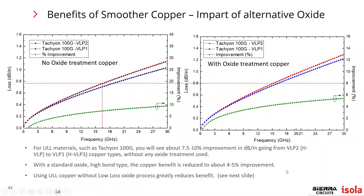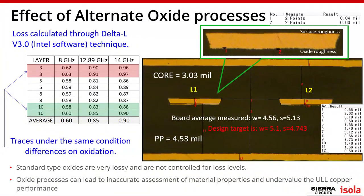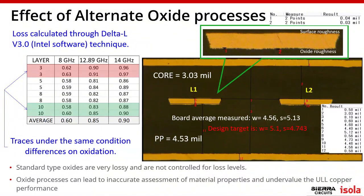An example of oxide process problems: a customer processed their interlayers back through oxide a second time because they had sat for a while and they wanted to make sure the oxide was in good condition. Basically in the same board on the same structures, there were two different levels of loss. This uncontrolled process where they did a second oxide pass ended up causing additional conductor loss.